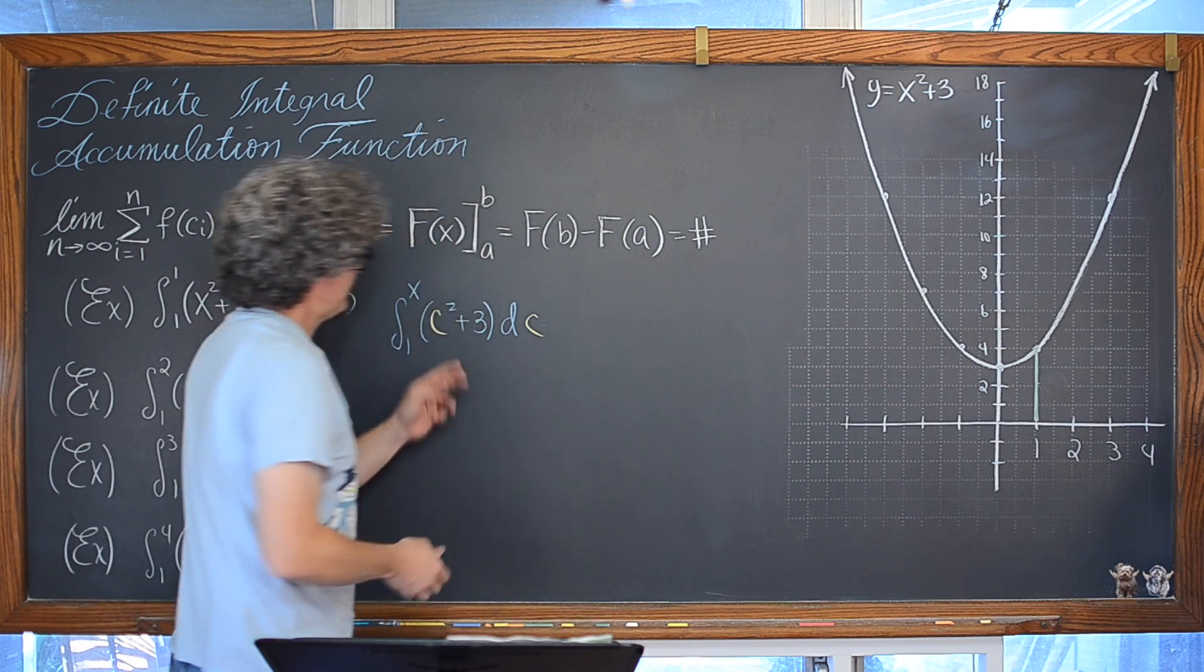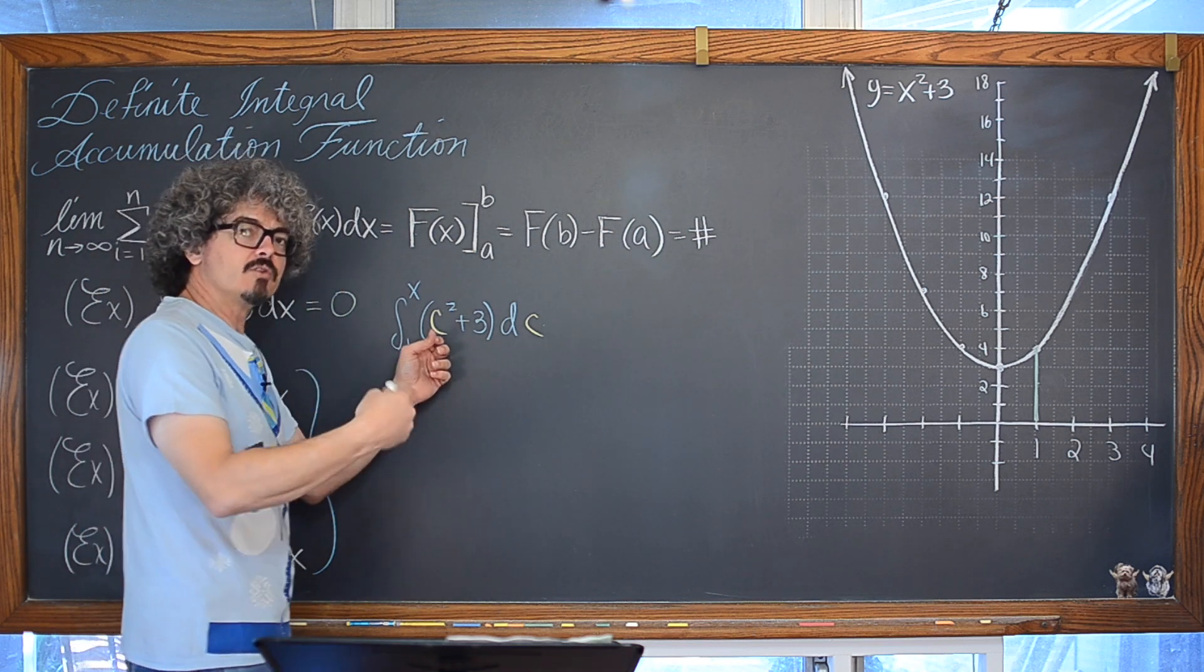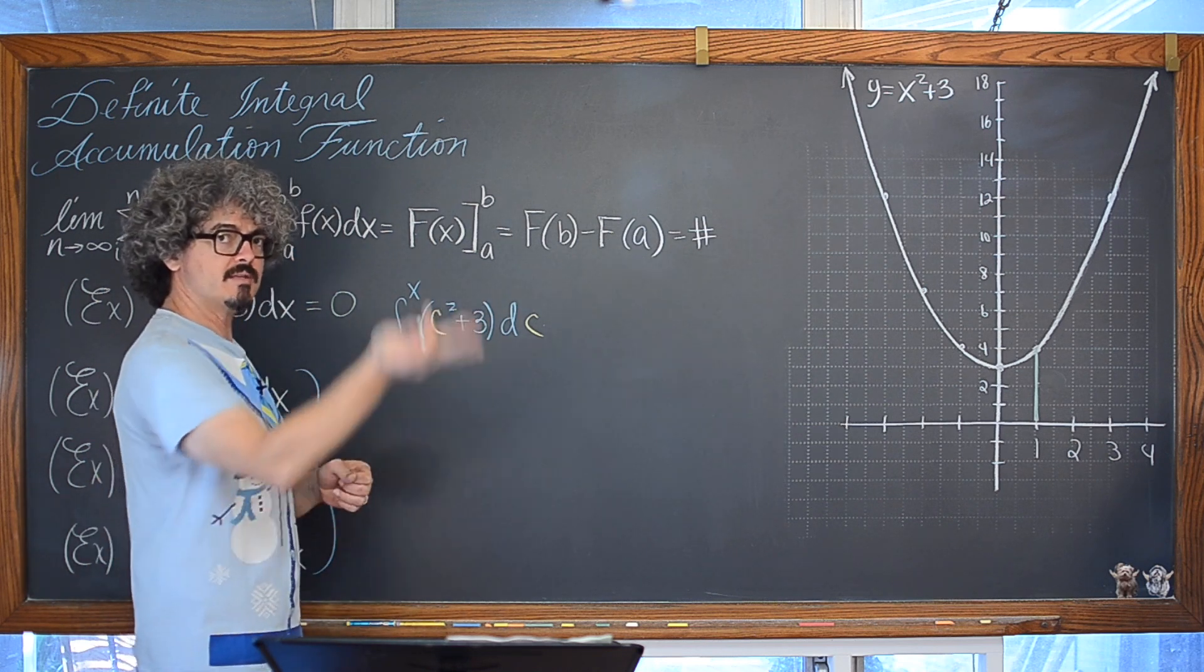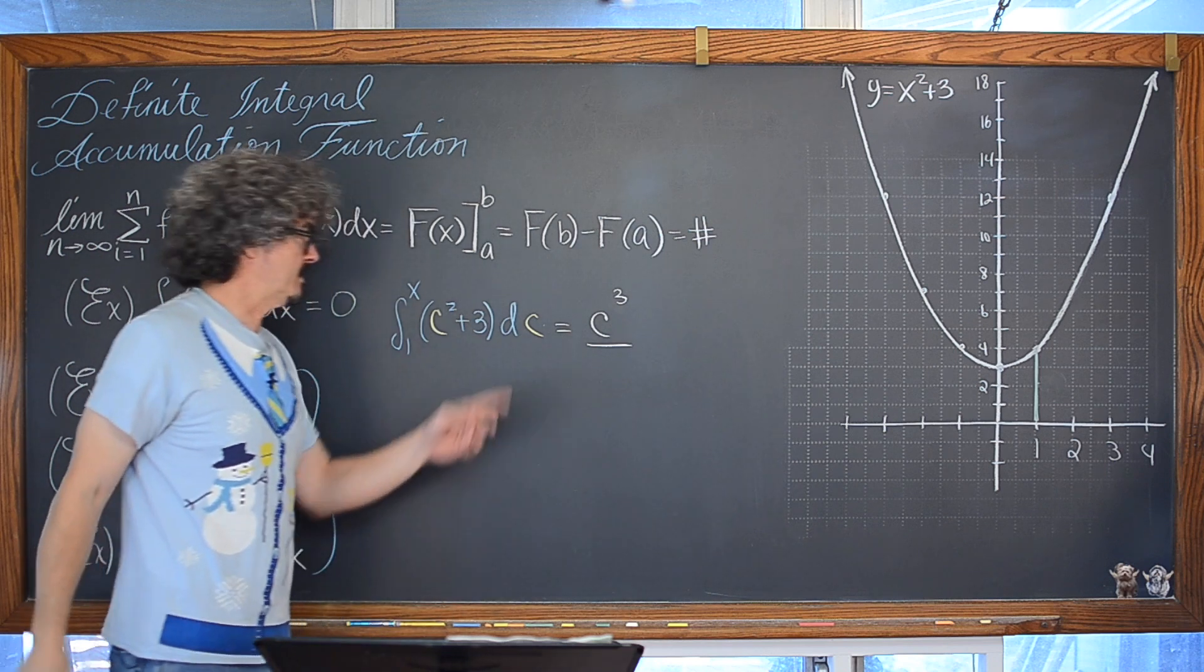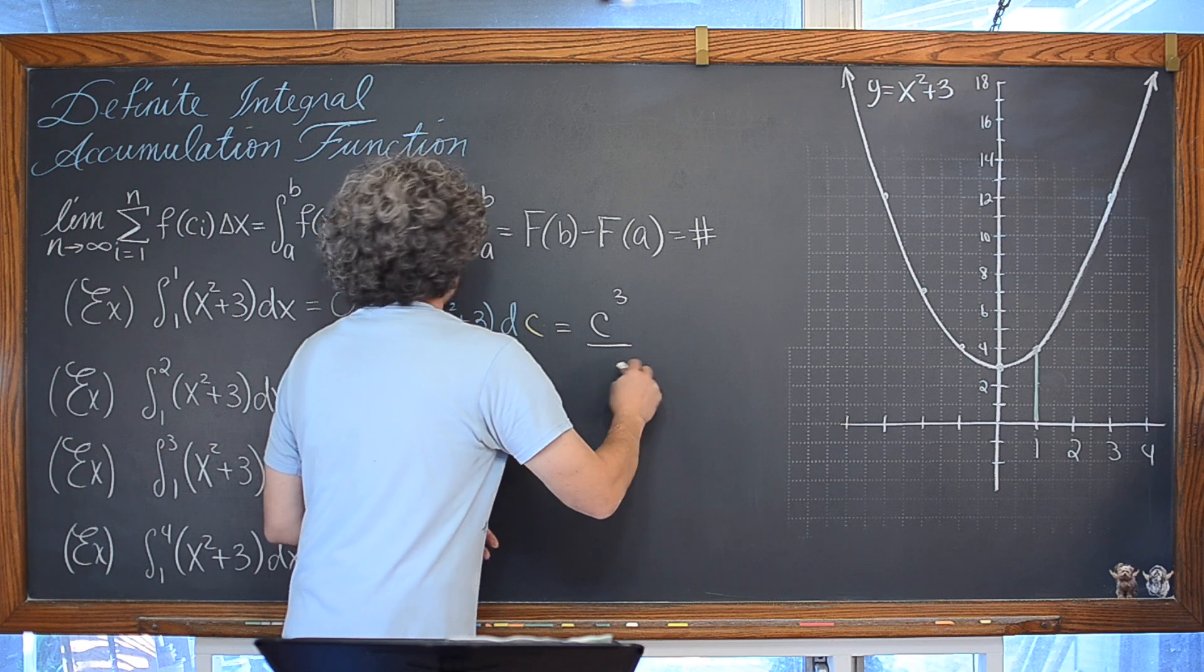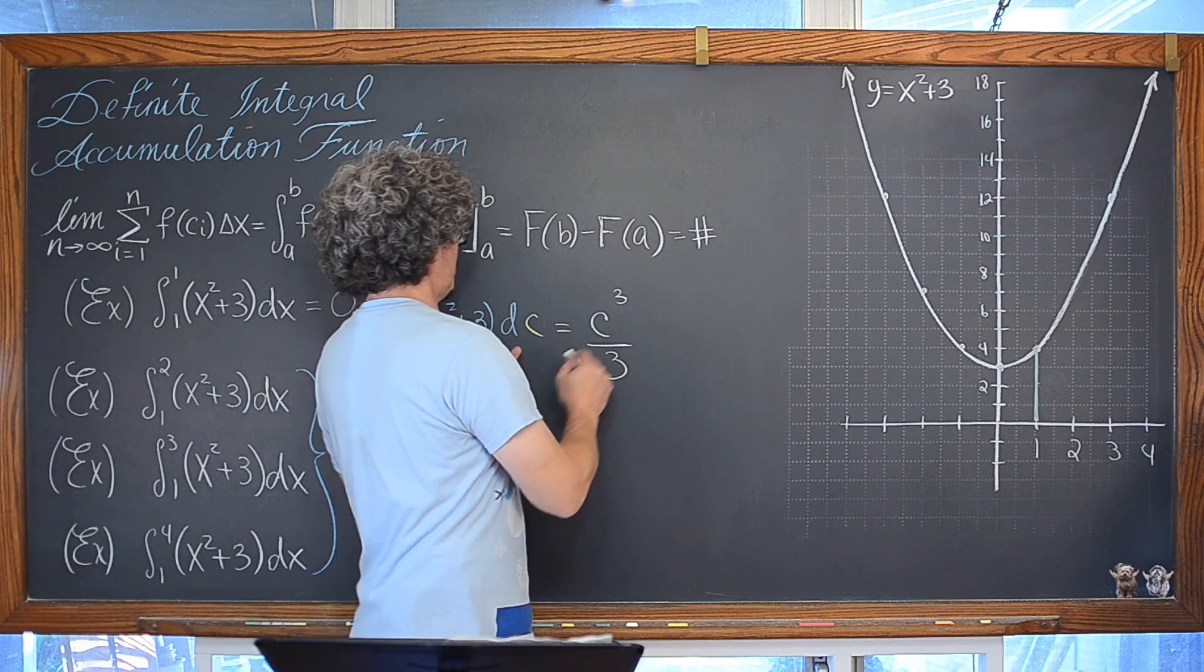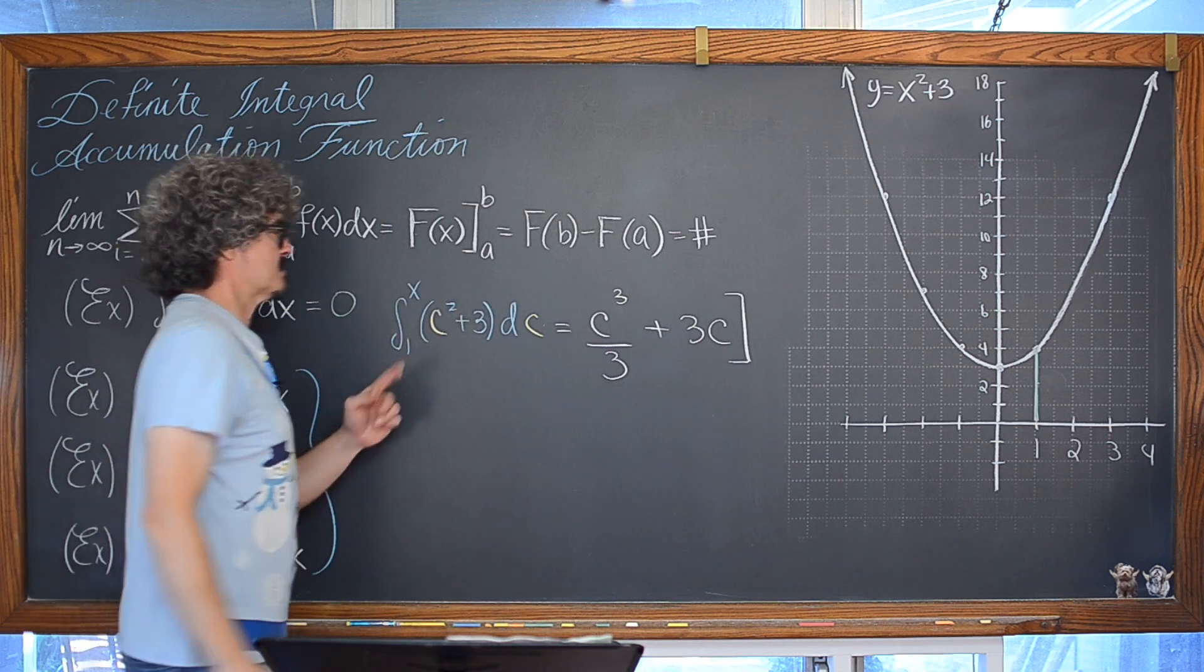So, working through now the integration process using that algebraic power rule, because we don't have any trig going on here, c to the second power, right? You get a variable based fixed exponent. We're just going to raise that exponent by 1, 2 plus 1 is 3, and then divide by that increased variable. Just kind of like the opposite, if you will, or inverse process you went through to the derivative using the power rule. The integral of 3 with respect to c is equal to 3c, and then we have that upper lower limit of x and 1.